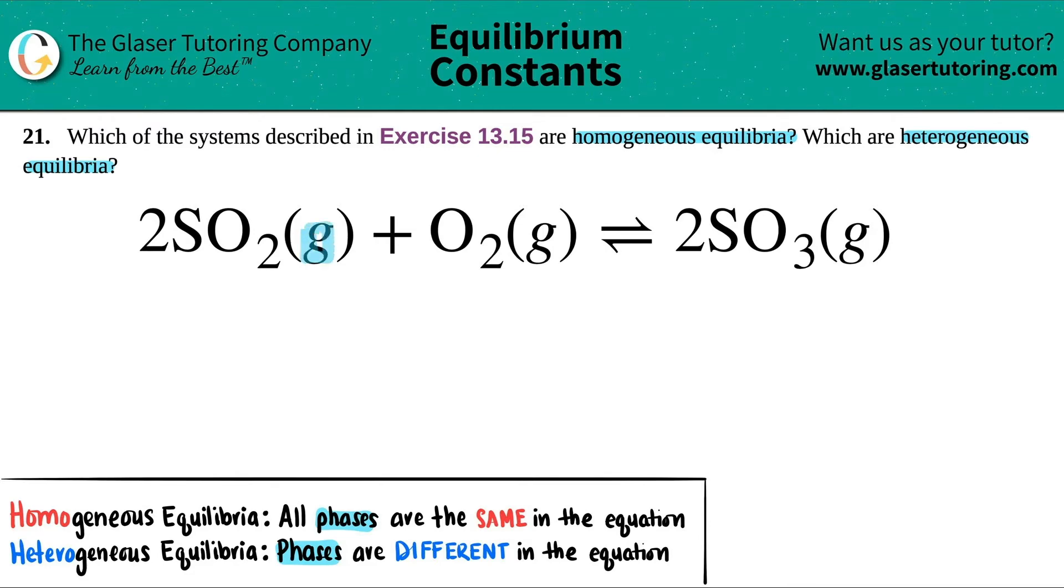Here I have a gas. Here I have a gas. And here I have a gas. Since all of these are exactly the same, they're all gases all throughout, all phases are the same. And this equation would be classified as a homogeneous equilibrium.